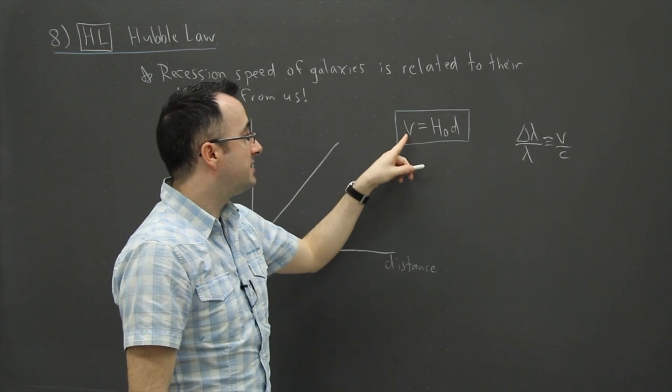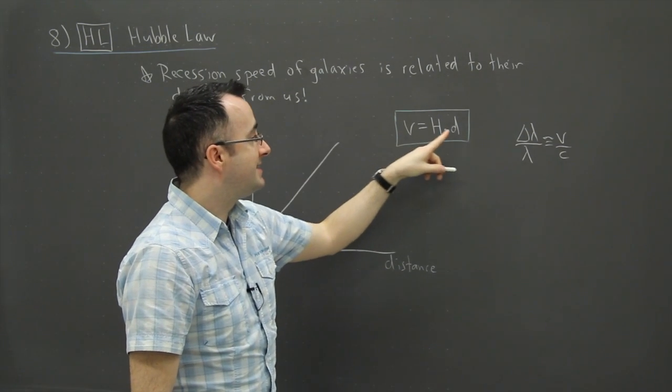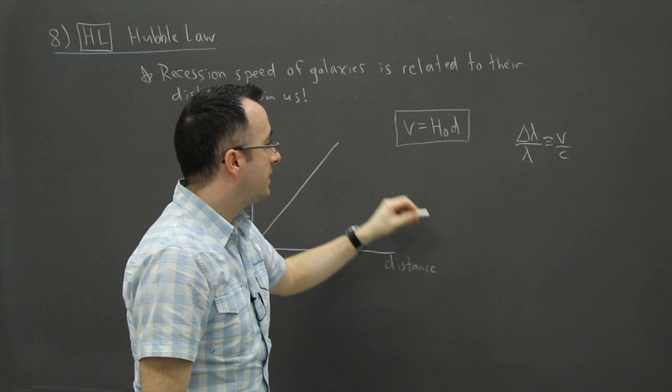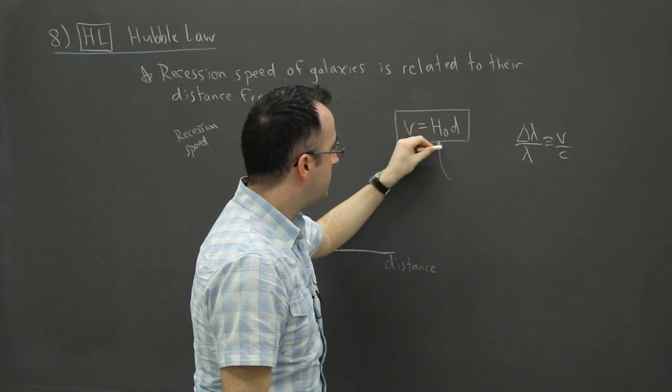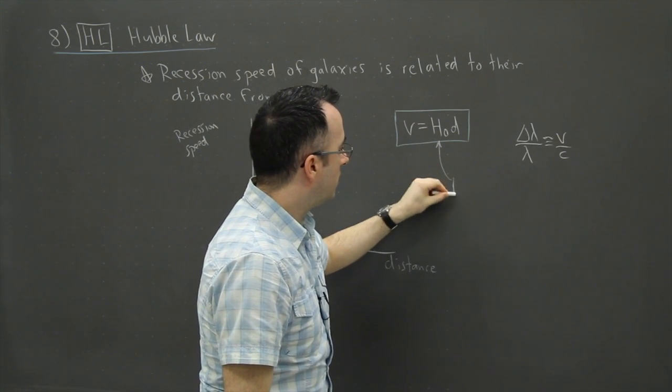So V is the recession speed of the galaxy, D is its distance away, and H zero is known as the Hubble constant.